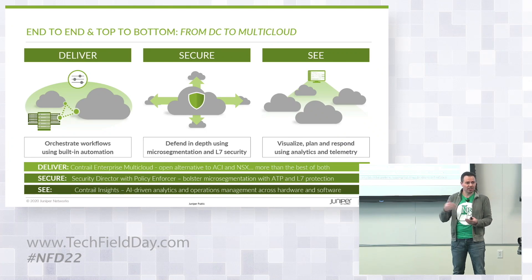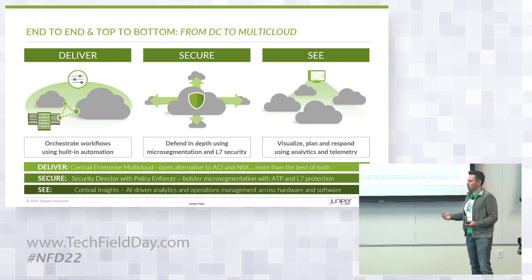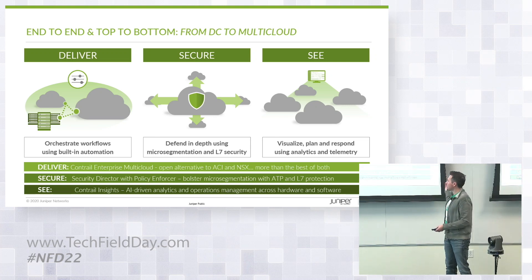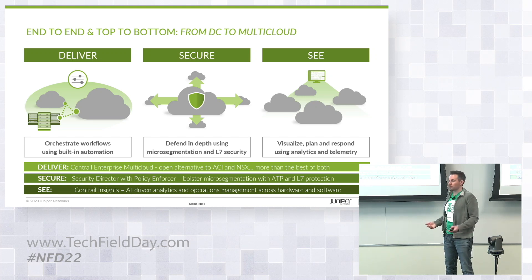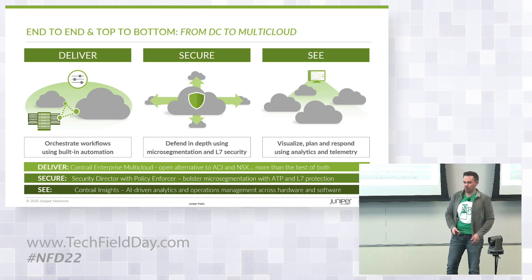Since then, we've evolved into use cases like VMware vSphere and other orchestration systems. Nick will cover how we support cloud-native systems like Kubernetes and OpenShift to securely connect microservice applications. The value propositions summarize as Deliver, Secure, and See — Harshit will show underlay-overlay correlation and analytics — simplifying the complicated tasks of EVPN VXLAN, whether provisioning or troubleshooting.